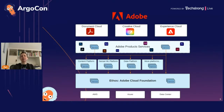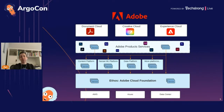First, a high-level view of services at Adobe. The three Adobe clouds — Document Cloud, Creative Cloud, and Experience Cloud — are comprised of various product services. These product services use several platforms like Content Platform, Data Platform, and Sensei Machine Learning Platform. And all services, both product and platform services, use Ethos, which is our cloud foundation platform. Ethos itself has clusters running on AWS, Azure, and data centers.